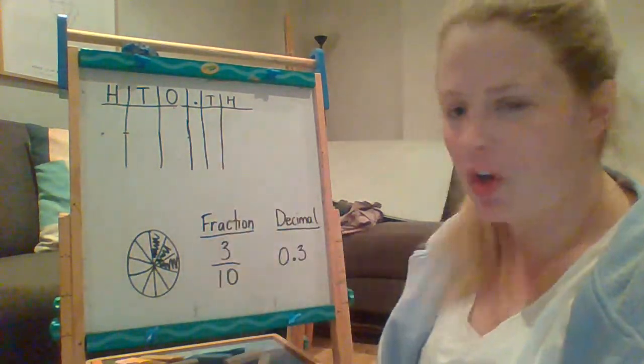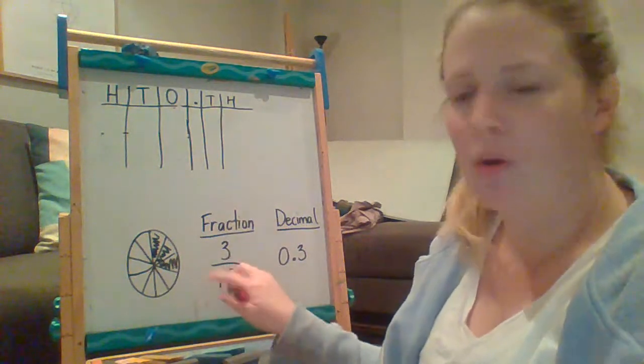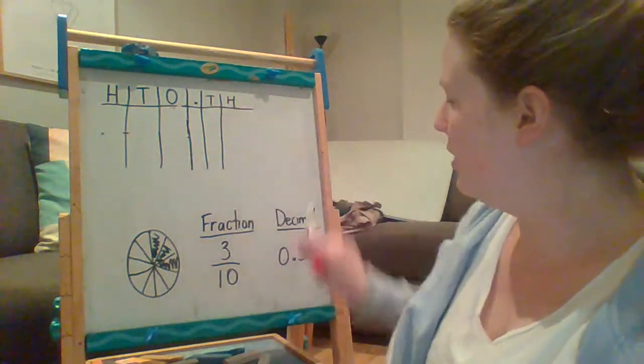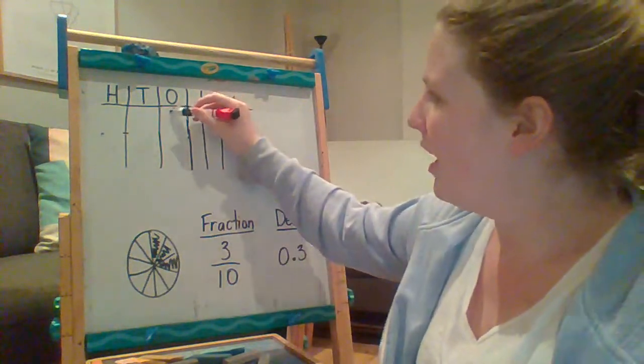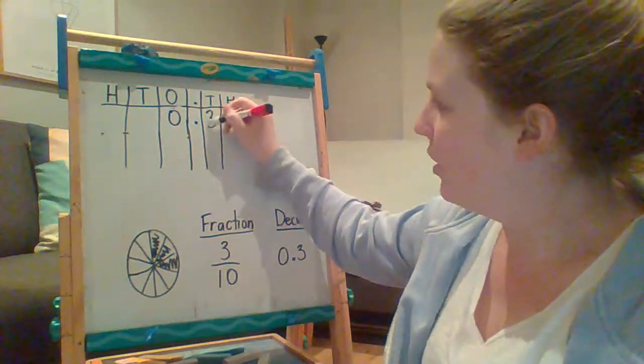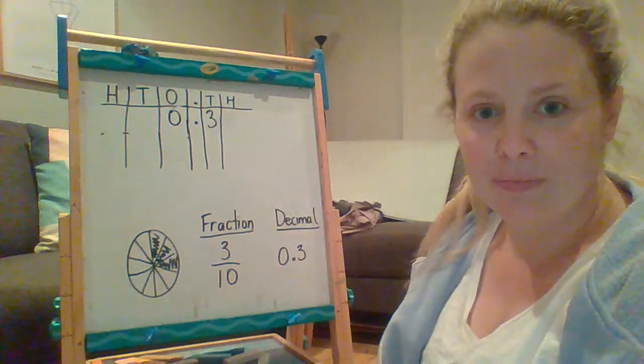I'm just looking at the tenths column. Do I need the hundredths? No, because we're not looking at hundredths, we're looking at tenths. So when I'm doing just like my decimal here, I have zero whole numbers, a decimal point, and then three tenths.